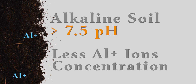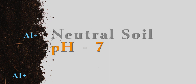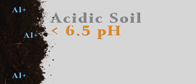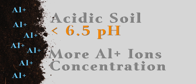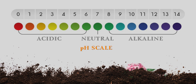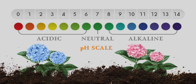In alkaline soil where the pH is 7.5 and higher, the concentration of aluminium ions is very low, and correspondingly the color of these hydrangea flowers changes to pink or red. In neutral soil where the pH is usually 7, the flowers are typically purple or blue. In acidic soil where the pH is 6.5 and lower, the concentration of aluminium ions is extremely high, causing the flowers to tend to be blue or green. Hence, pink or red color indicates basicity, while blue or green indicates that the soil is acidic.